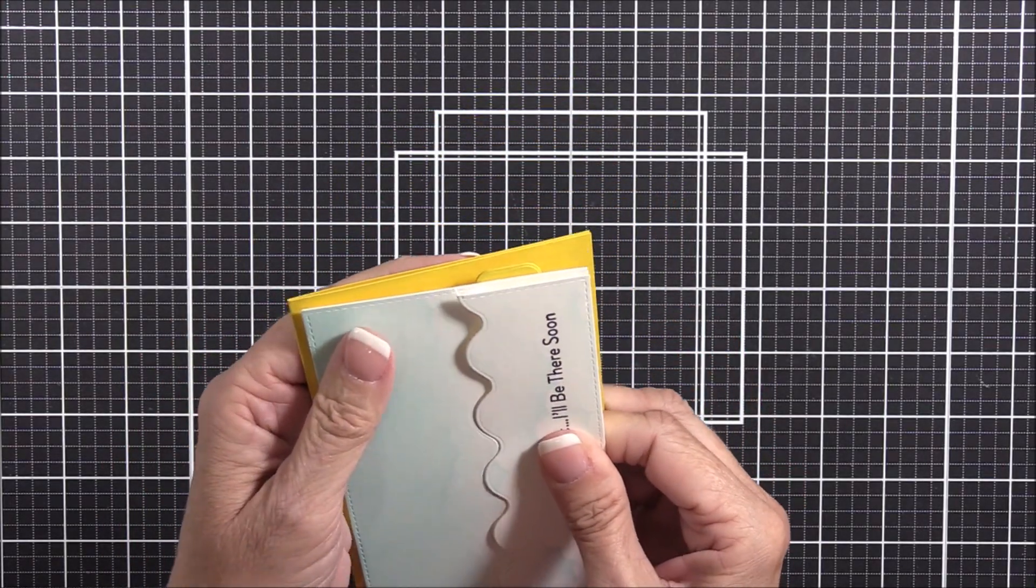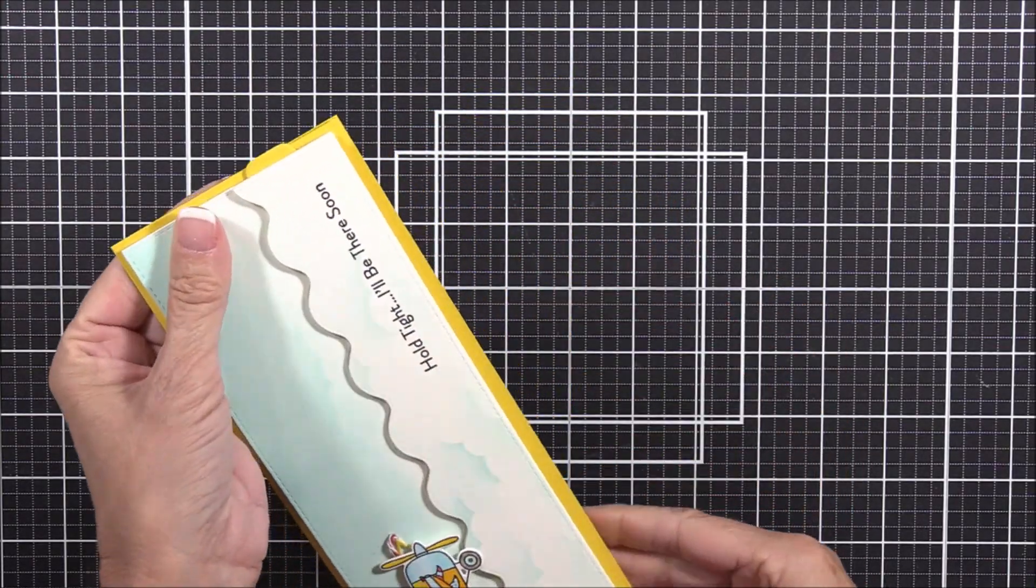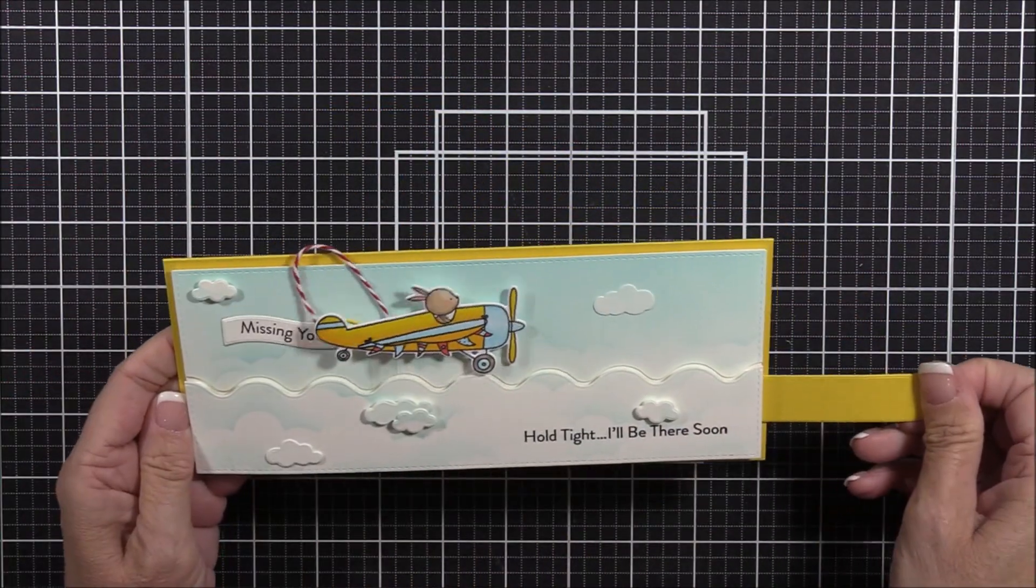I like to use my Teflon bone folder to perfect the crease of my card bases, especially with the heavier weight card base.